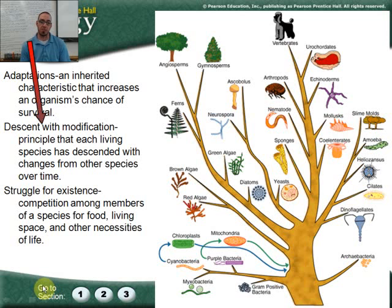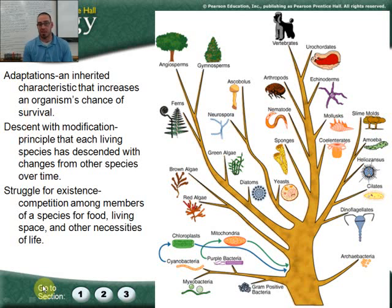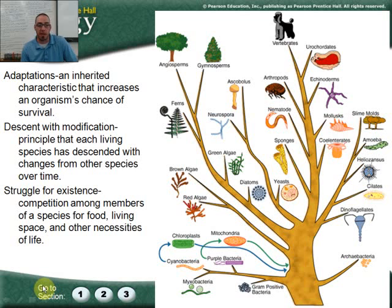Darwin came up with the idea of descent with modification, meaning what you see on the tree of life: every organism has descended with subtle changes, and those subtle changes could be enough to adapt and change a species. This comes into play with struggle for existence — every species is struggling and competing for food, and subtle adaptations might increase their ability to survive and reproduce. You're seeing the tree of life as a result of that struggle for existence and the adaptations that have helped creatures survive. We are the remnants of ancient ancestors.